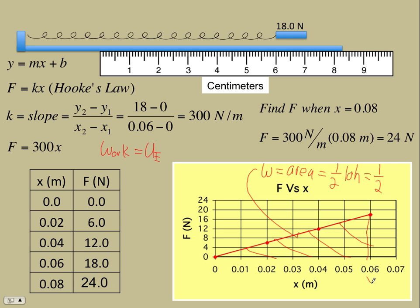It's one half the base times the height. In this case the base is our x, so instead of 0.06 let's just call it generic x for whatever distance we stretch the spring. And then the height, well the equation of this line is f equals kx, so at some x point the height of the triangle is going to be kx.